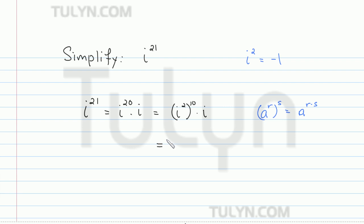And then simplifying further, i squared is equal to negative 1. So we can write that in the parentheses for i squared. So now we have negative 1 to the 10th power times i.